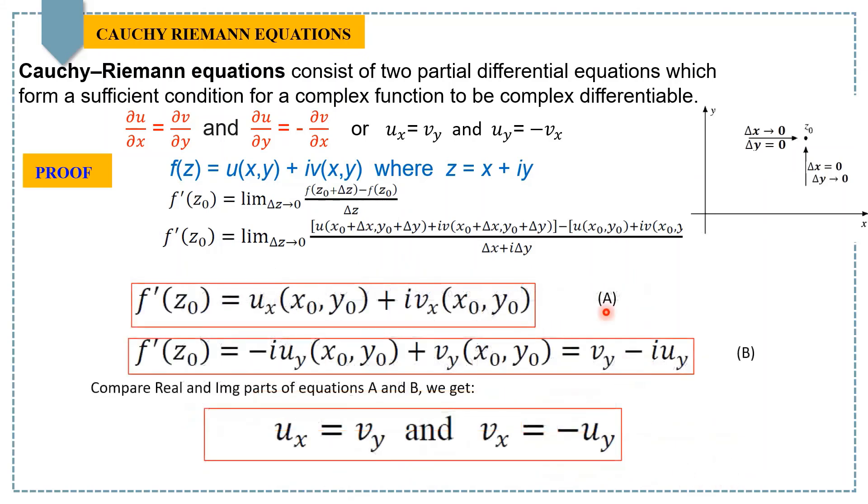Now, these two equations A and B can only be true if their real parts and imaginary parts are equal to each other. And here are our Cauchy-Riemann equations.